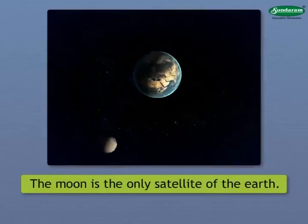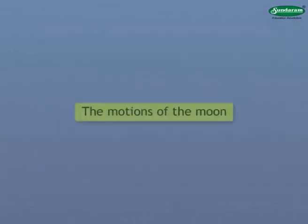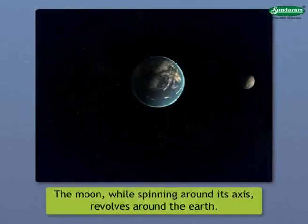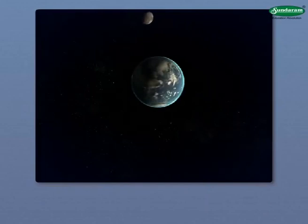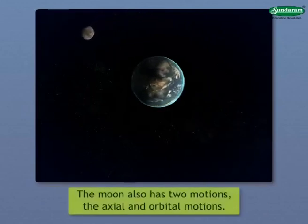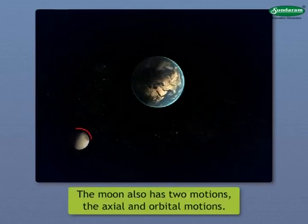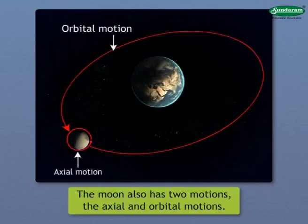The Moon is the only satellite of the Earth. The Moon, while spinning around its axis, revolves around the Earth. This means that like the Earth, the Moon also has two motions, namely, the axial and orbital motions.